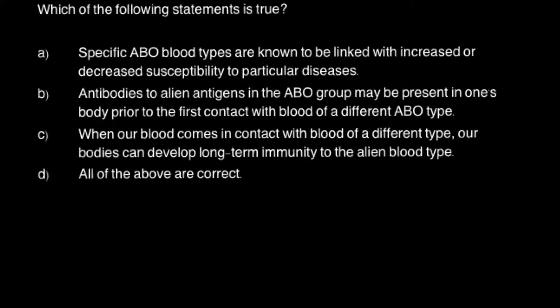So here is a question: Which of the following statements is true? Statement A: Specific ABO blood types are known to be linked with increased or decreased susceptibility to particular diseases. And this is a true statement. In different nations we can find different frequencies of blood groups because of different susceptibility of people with certain blood groups to diseases prevailing in those areas, as different geographic areas have different climates and temperatures.